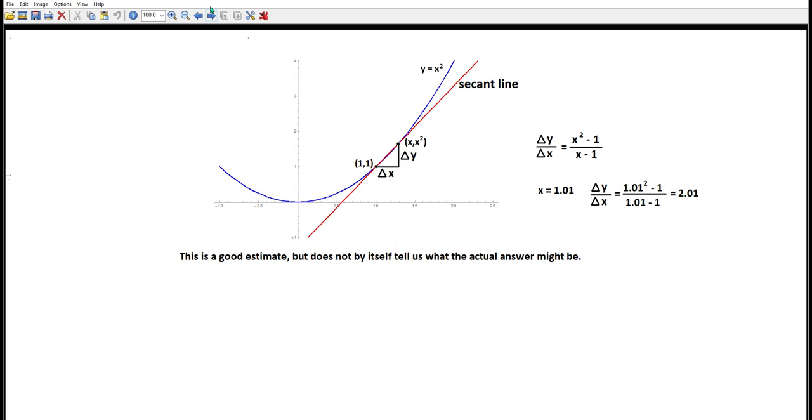Now this is a good estimate, but it does not by itself tell us what the actual answer might be. We need to look at several estimates and we want to look at the estimates as x gets closer and closer to 1. Do these answers tend to a single number? If so, that's the slope.